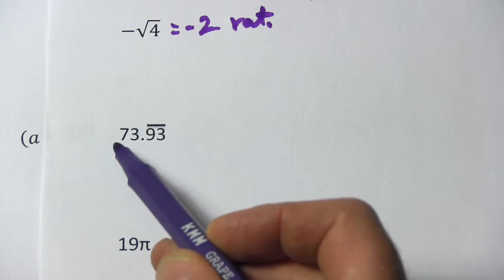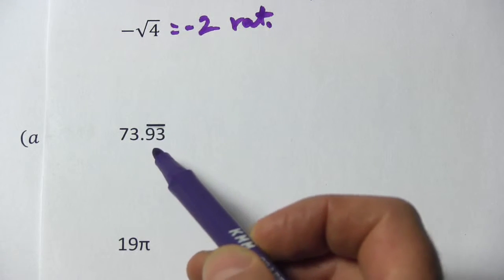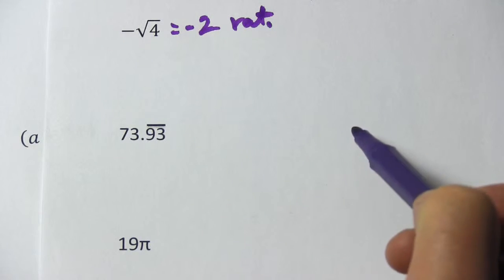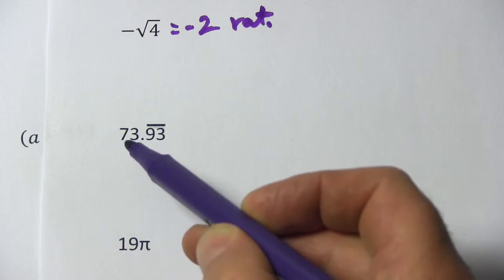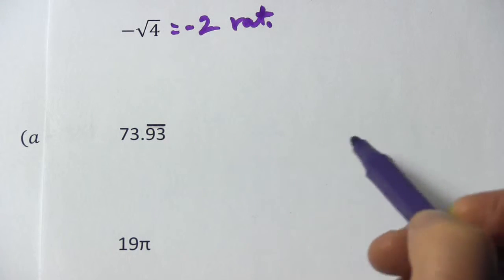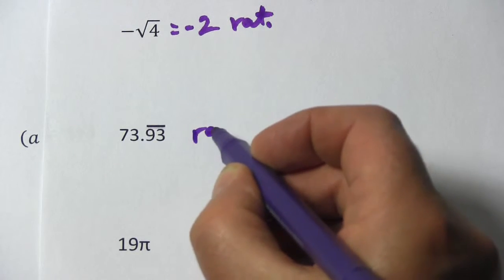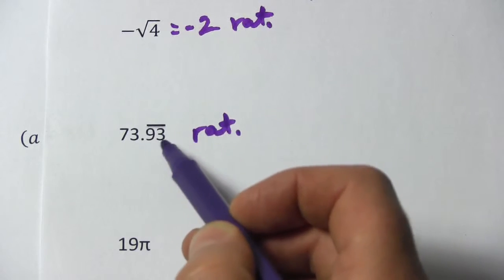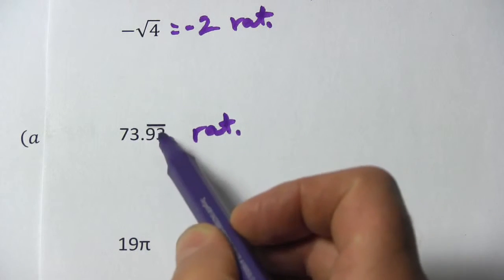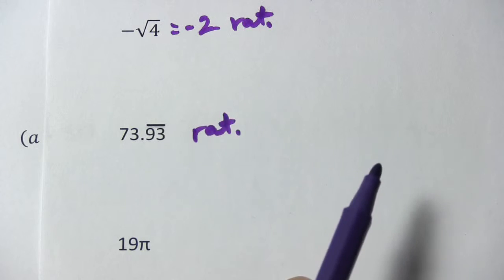So this next one, 73 and then the bar over the .93, that means the .93 repeats forever. So this is really 73.939393 on into infinity. That is a rational number. The reason it's not irrational, even though it goes on forever, it's a repeating decimal. Those are rational numbers.